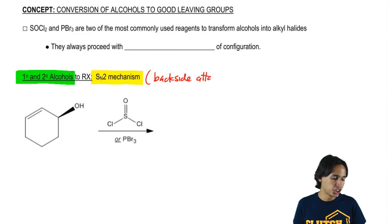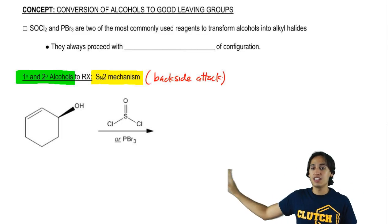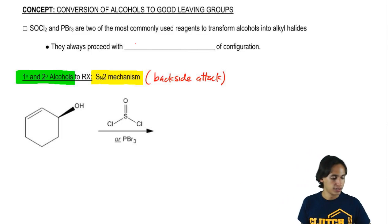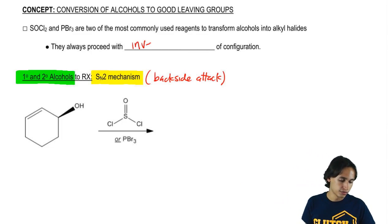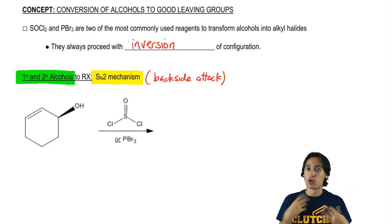Remember that tertiaries suck at it because tertiaries don't have a good backside. So I need it to be either primary or secondary. Since this is a backside attack, what kind of stereochemistry do you think we could expect? We're always going to get inversion of configuration.